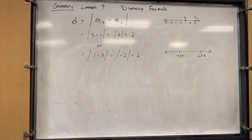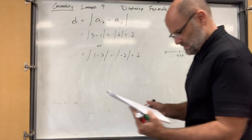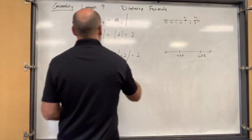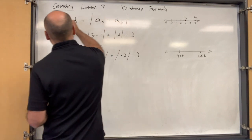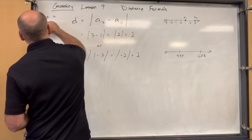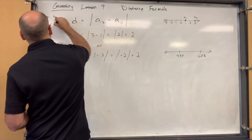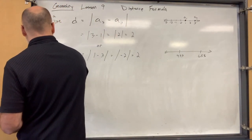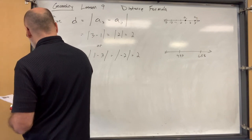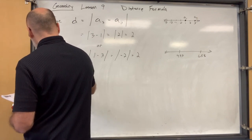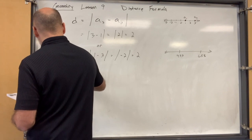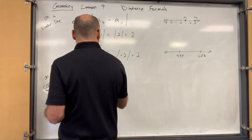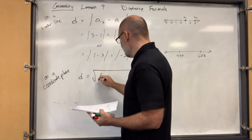We won't do more number line examples since you basically just did one on your test. That was the distance formula for a number line. Now, what happens on a coordinate plane? It's different. I'm going to tell you the distance formula and it might look intimidating at first, but then I'm going to explain it and you'll be like, 'Oh, okay.'